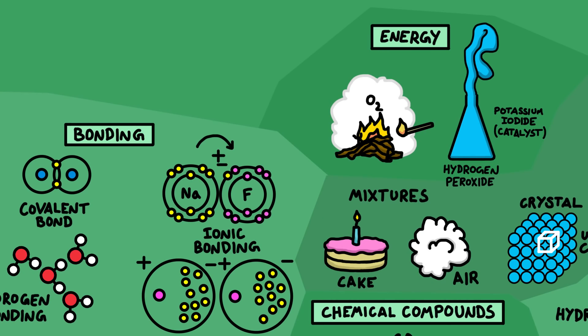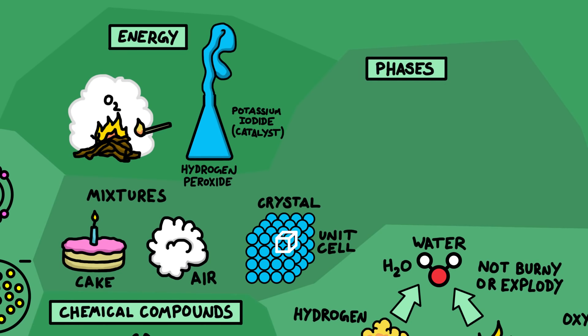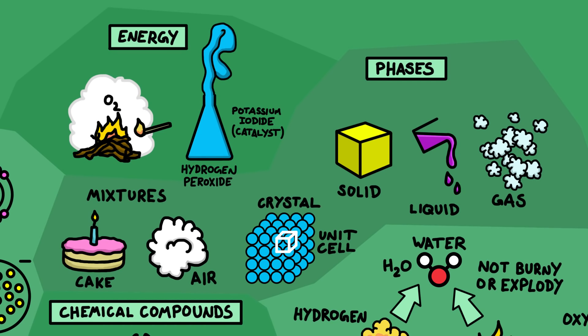Energy also determines when compounds will exist in the different forms: solid, liquid or gas. Which form they'll be found in comes from the temperature that they're at, and the pressure that they're under.